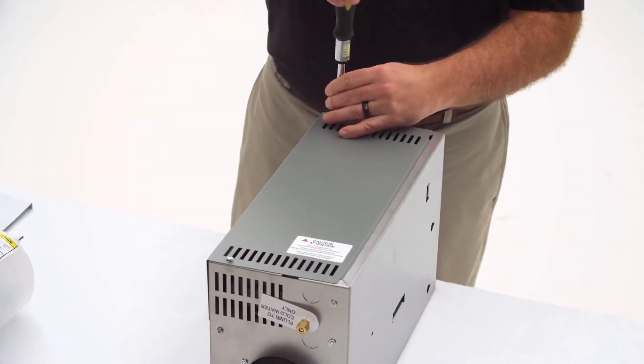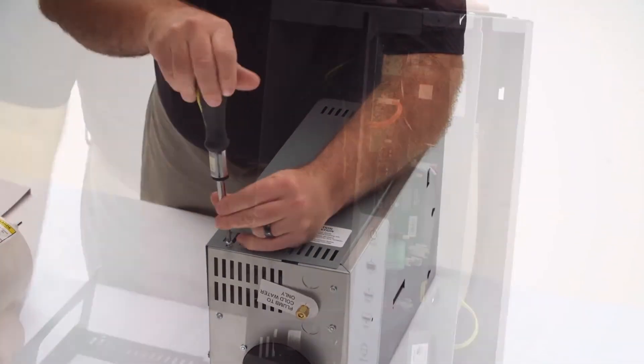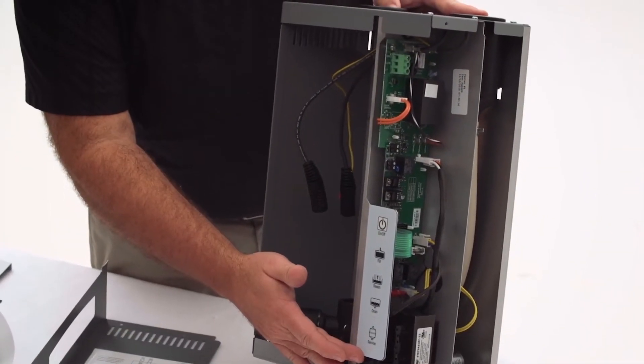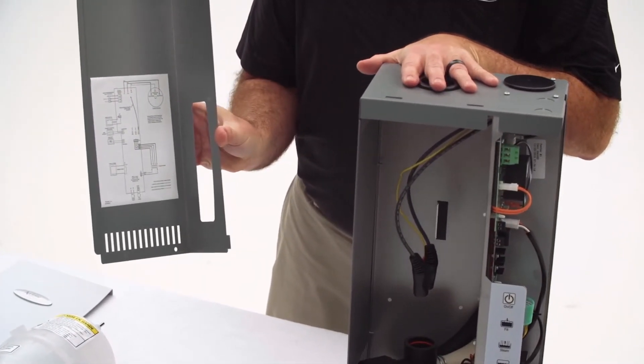On the side there are two screws to take off to remove the electrical access panel. On the front is the on-off panel and display. Also to note is a complete wiring schematic on the back of the door.